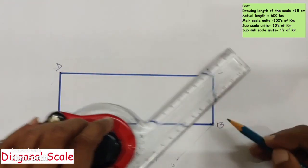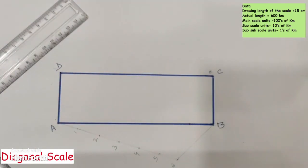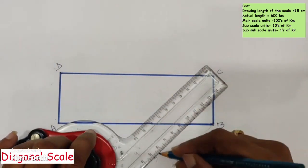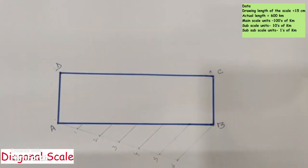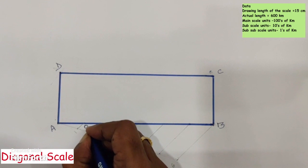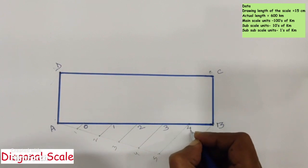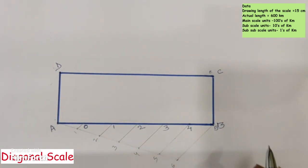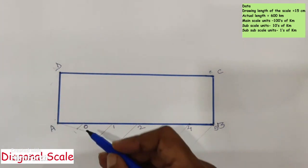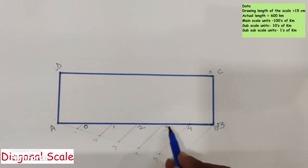Draw lines parallel to the line connecting point 6 and point B, passing through points 5, 4, 3, 2, and 1 on the acute angle line. Number the first part as zero, then 1, 2, 3, 4, and 5 for the remaining main scale divisions along AB. Then, perpendicular to AB, passing through 0, 1, 2, 3, and 4, draw lines towards CD.